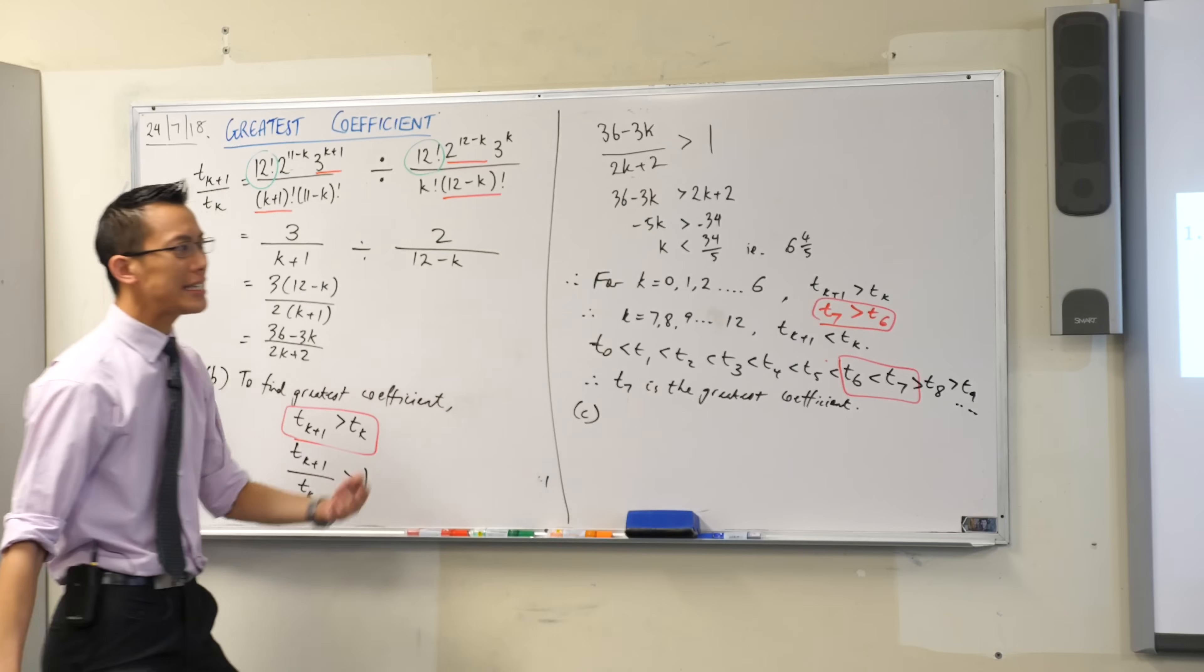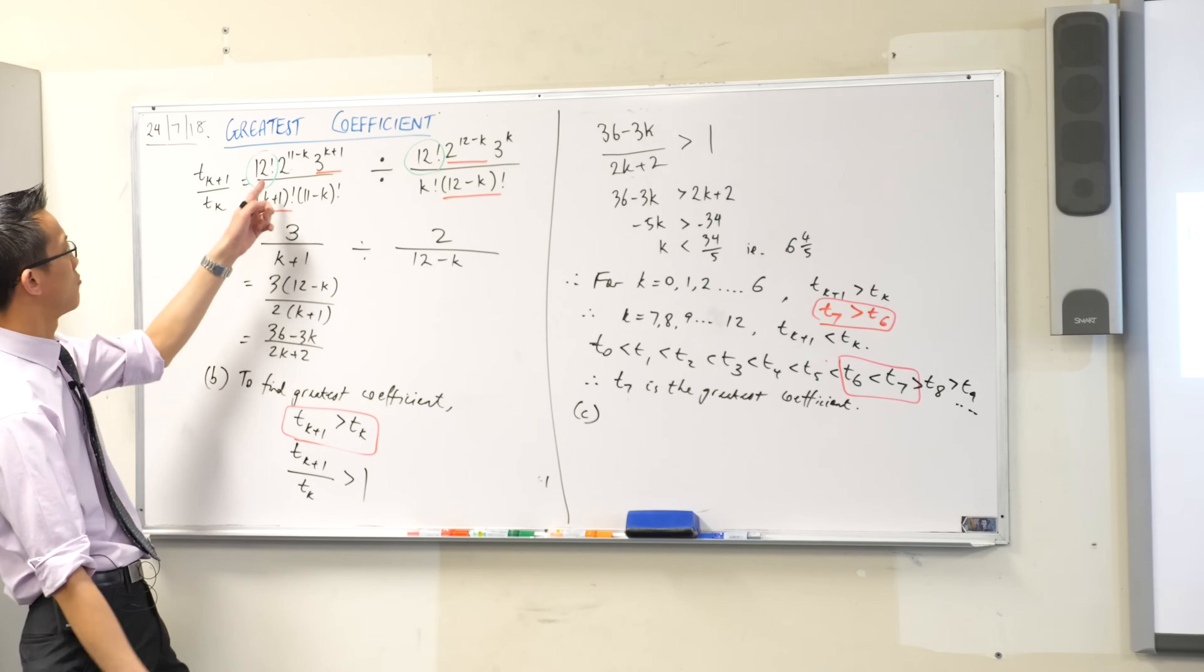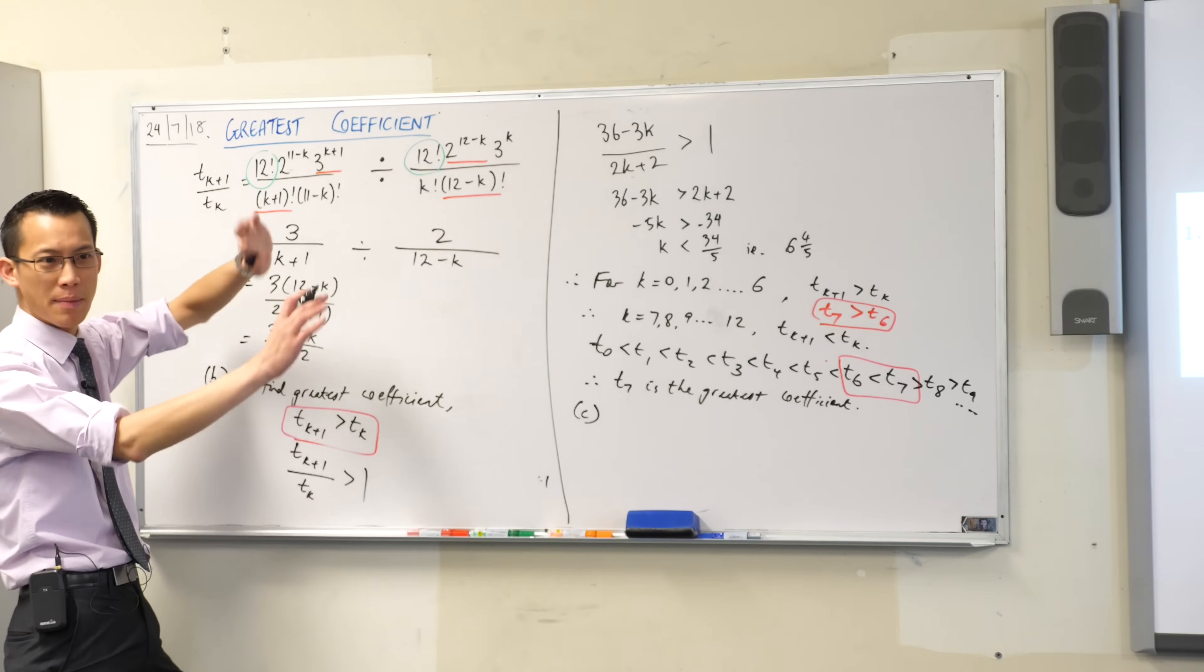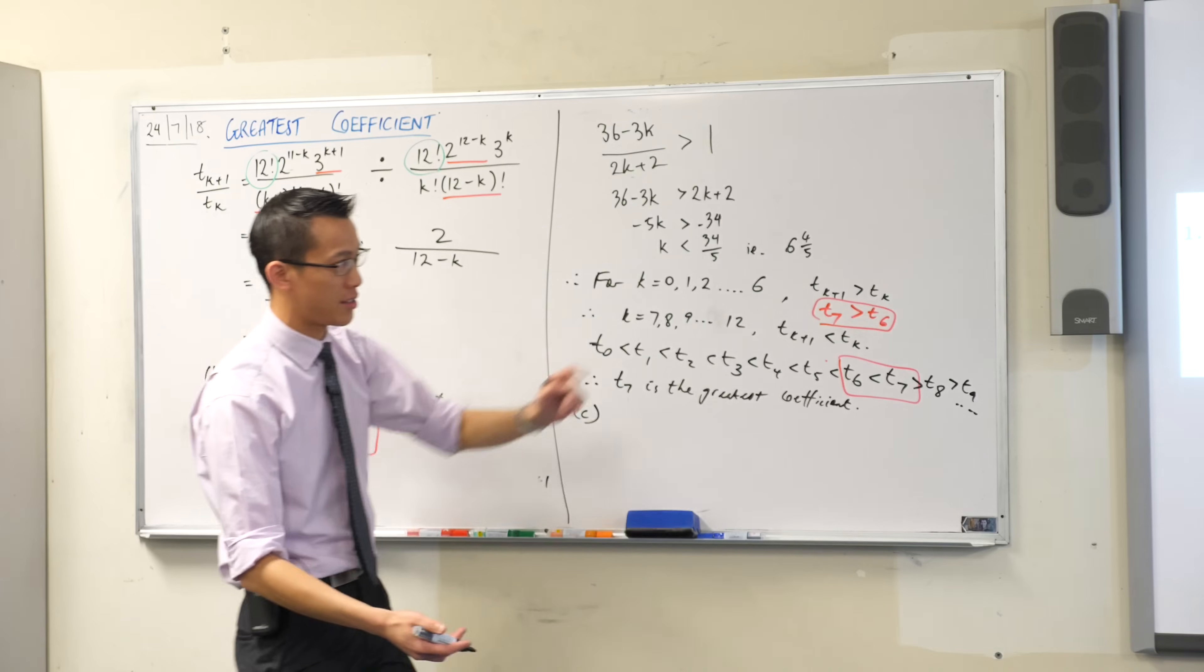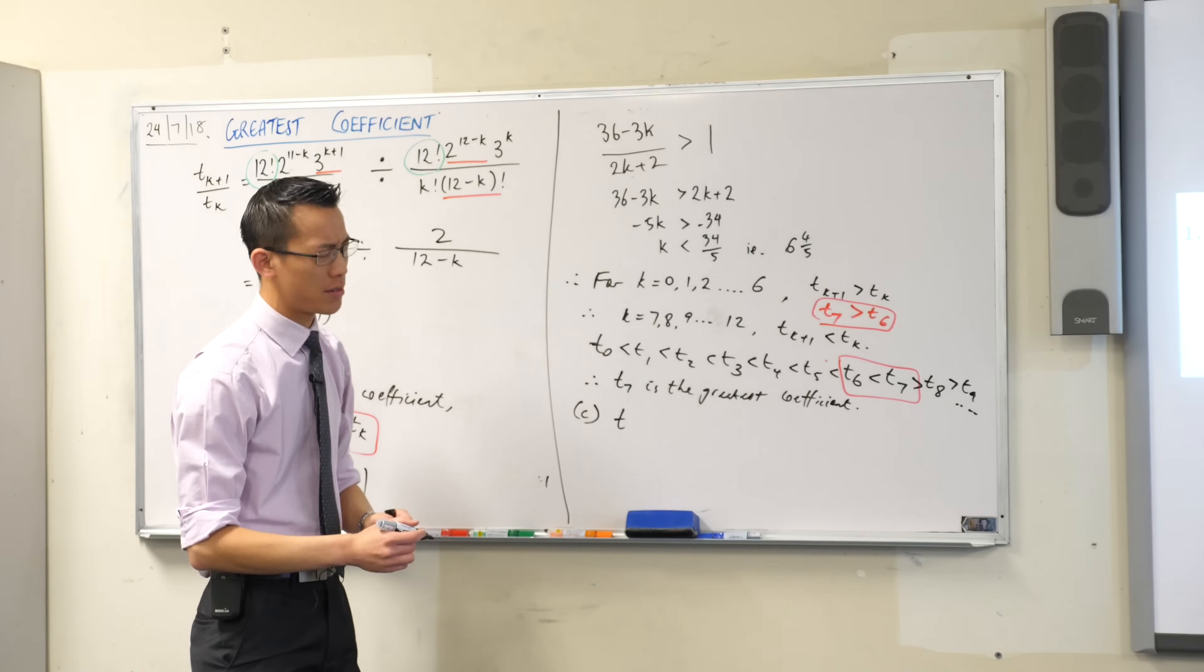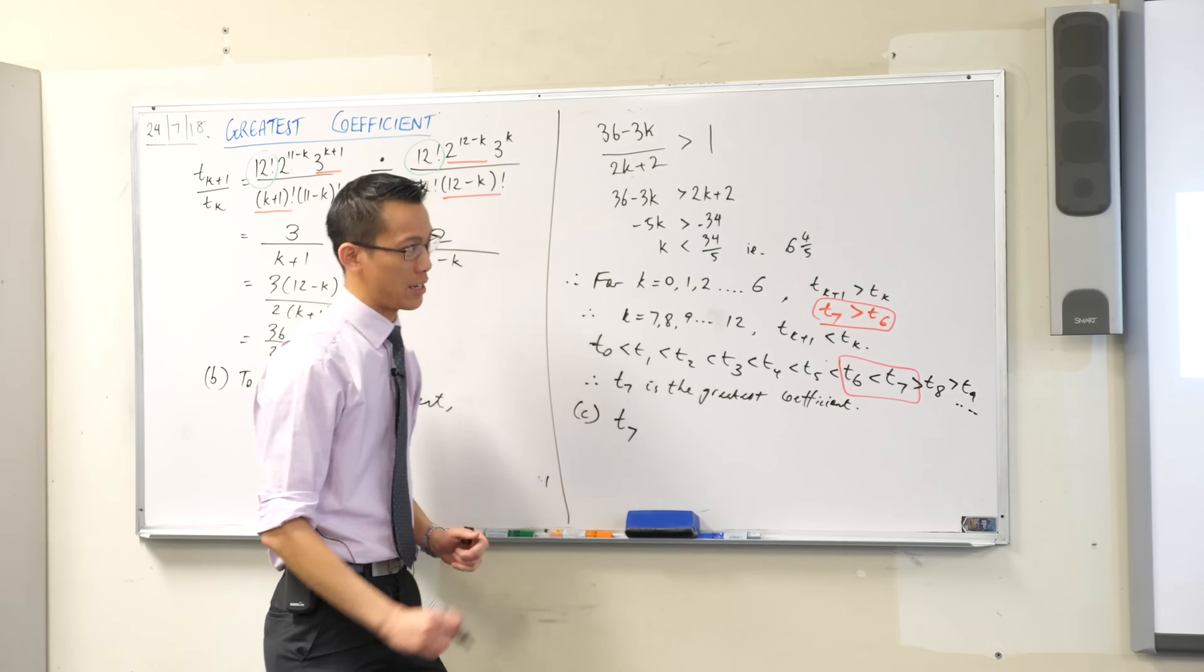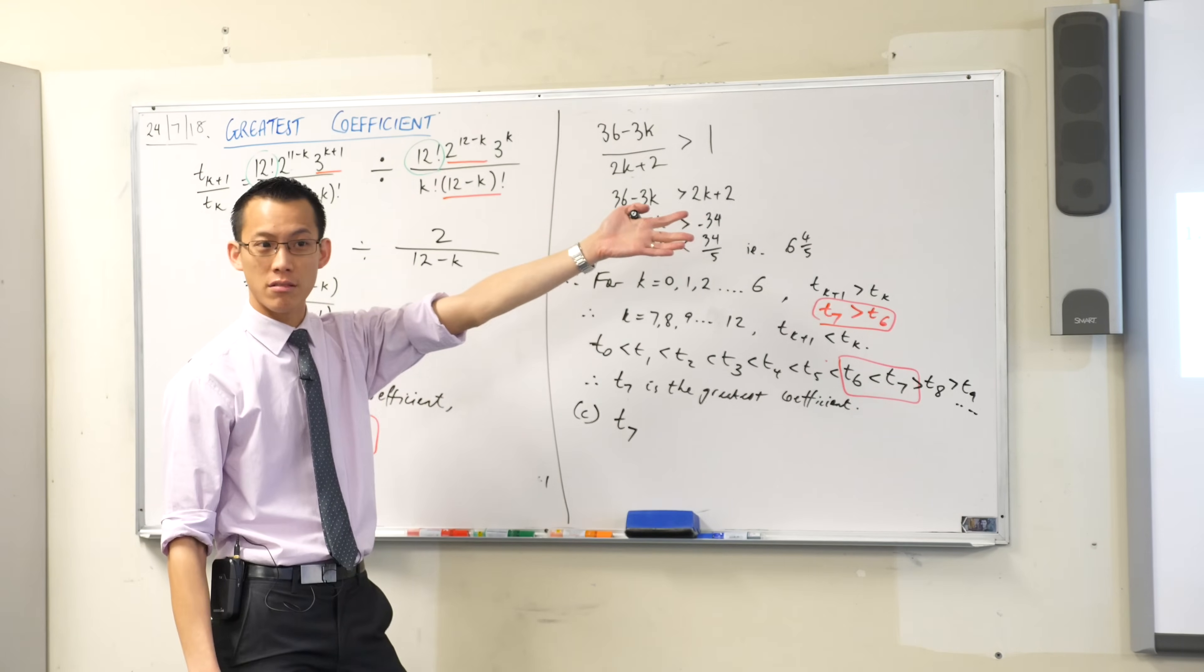So part C says, write down the greatest coefficient, leave it factored. So they mean when you get numbers here, don't actually expand them out and evaluate. So if you have a look back, you can see we've got term k, we know what that is, but coefficient k, I don't want coefficient k, I want the seventh one. Okay, so all I'm going to do is substitute in seven.